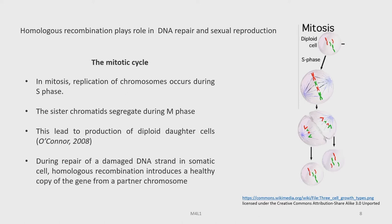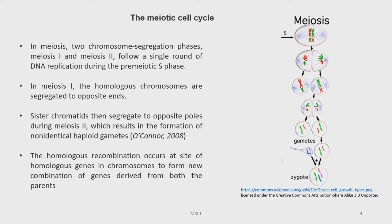The sister chromatids segregate during the M phase, leading to production of diploid daughter cells. During repair of a damaged DNA strand in a somatic cell, homologous recombination introduces a healthy copy of the gene from a partner chromosome. While in the meiotic cell cycle, two chromosome segregation phases exist — meiosis 1 and meiosis 2 — and they follow a single round of DNA replication during the pre-meiotic S phase.